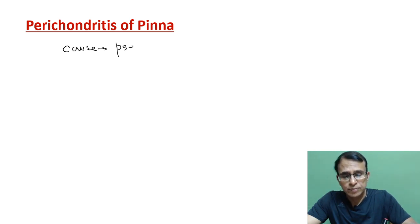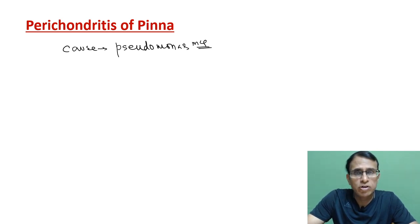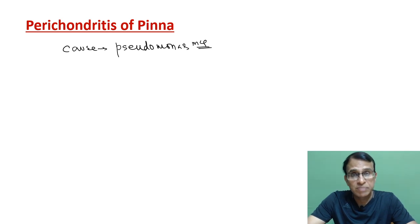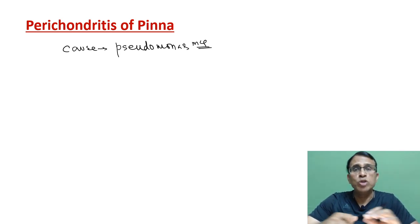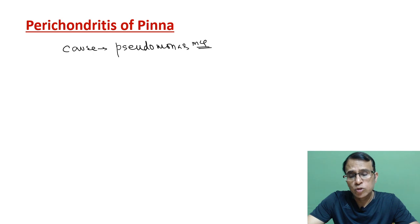The most common cause of perichondritis of the pinna is Pseudomonas — this is important and also an MCQ point. Perichondritis can happen anywhere in the body, and for the rest of the body it is caused by Staph aureus. So if they ask which is the most common pathogen causing perichondritis in general, the answer is Staph aureus; but if they ask specifically about perichondritis of the pinna, it is Pseudomonas. Pseudomonas is mostly an opportunistic pathogen, so it's more common if the patient has a drop in immunity — diabetes, steroids, etc.